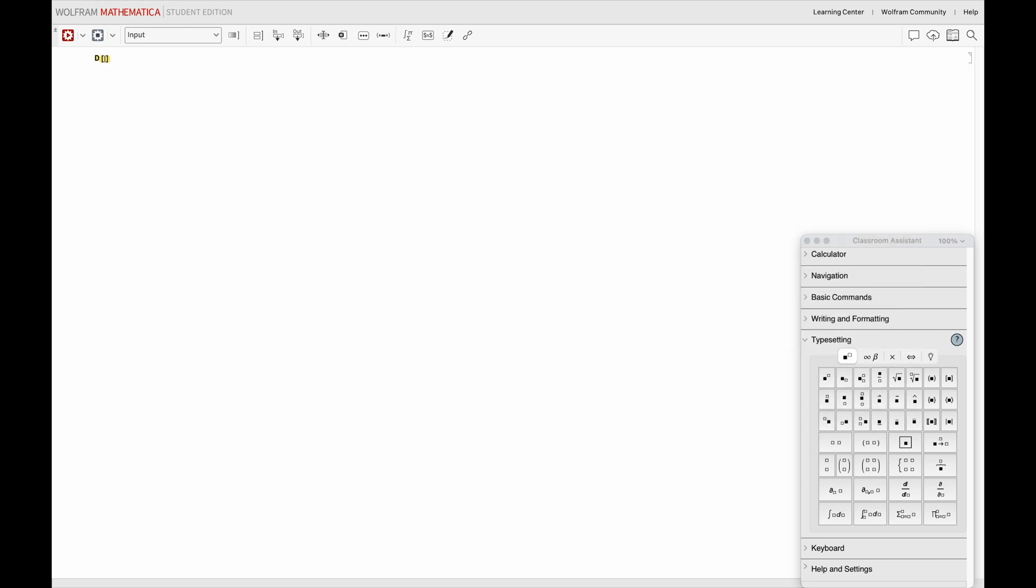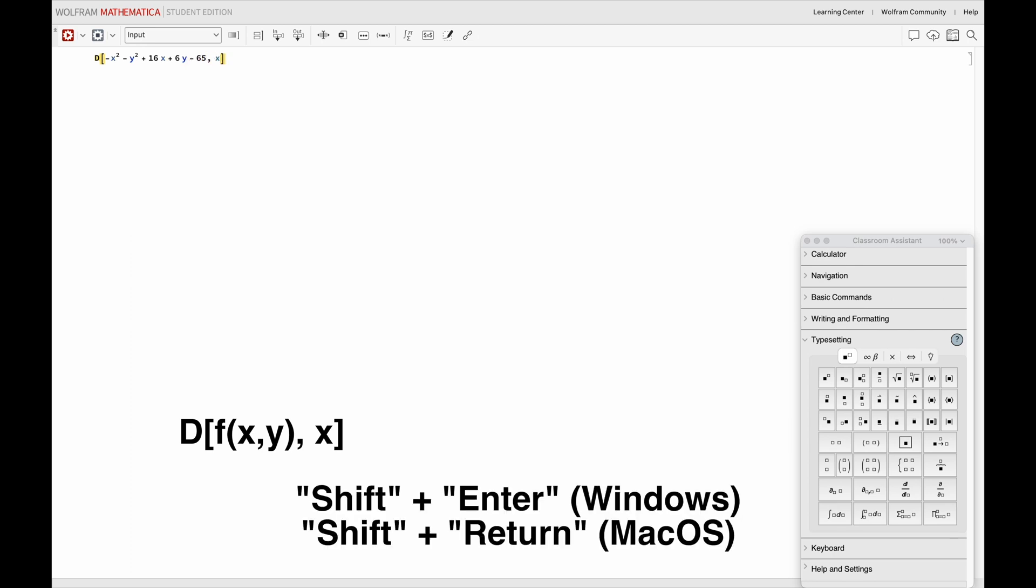To find the first order partial derivatives, firstly with respect to x, we use D open and close square brackets. Within the square brackets, type your function f(x,y), comma x, and hit shift plus enter to run the code. Similarly, to differentiate with respect to y, we do exactly the same, but instead of the comma x, we do comma y.